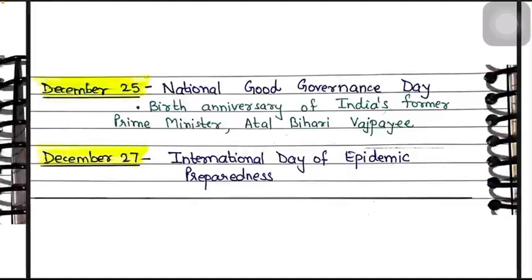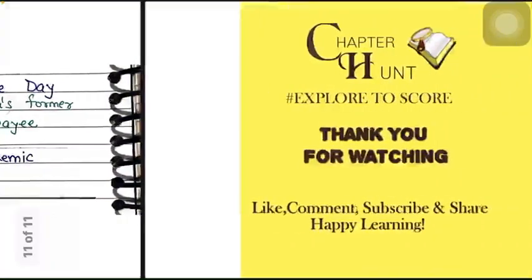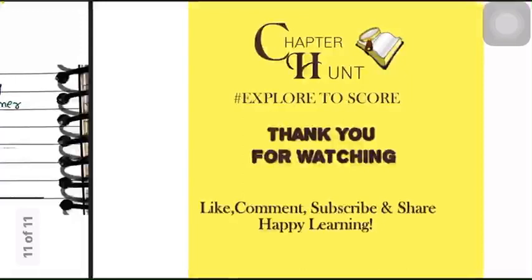December 27 is the International Day of Epidemic Preparedness, done to advocate the importance of global partnerships in combating epidemics. This was first celebrated by the United Nations on December 27, 2020, and helps prevent COVID-19-like situations. That's all for this video. I hope you found it useful. Please like and share it with your friends, and if you haven't subscribed to Chapter Hunt, please do so for many more informative videos. Stay tuned, stay safe — I'll see you soon. Take care, bye!